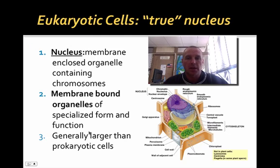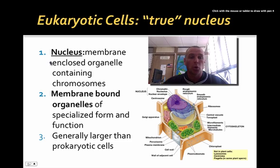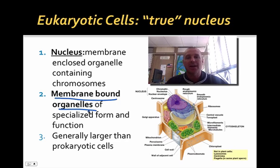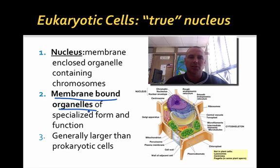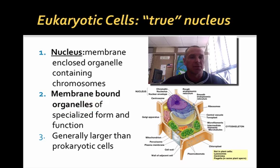Eukaryotic cells means true nucleus. The nucleus is where the chromosomes are housed inside eukaryotic cells, and as mentioned, they have membrane-bound organelles — very important. This allows them to have specialized form and function, and we'll talk about these membrane-bound organelles later on in the unit. Eukaryotic cells are generally larger than prokaryotic cells — prokaryotic cells you usually can't see with the naked eye, whereas eukaryotic cells most often times you can.